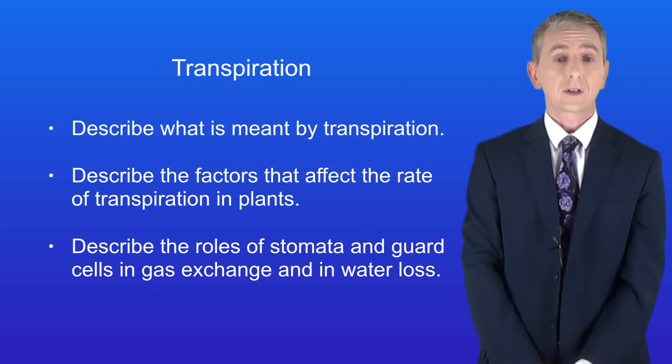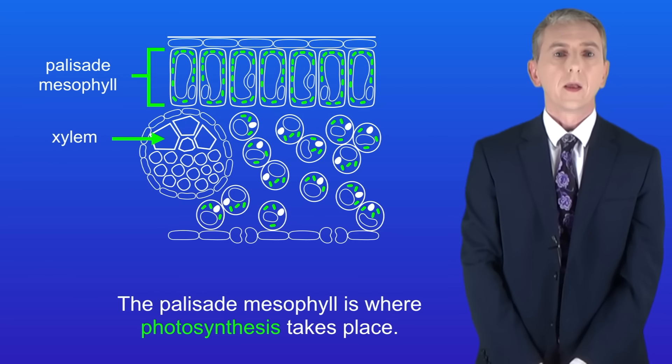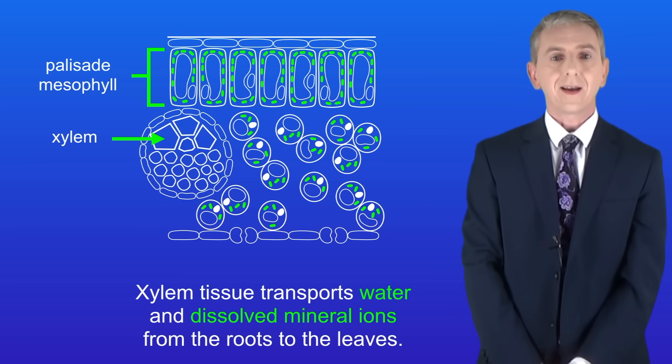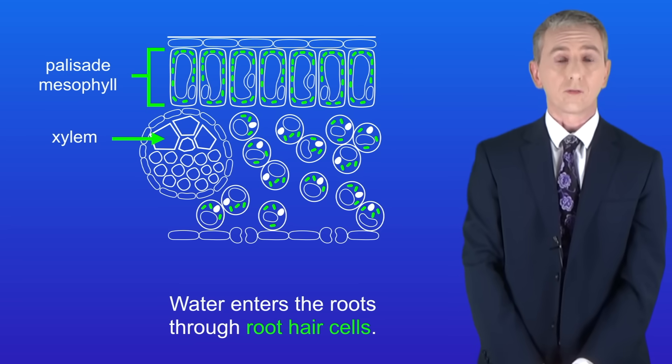In the last video we looked at the different tissues found in the leaf. Two of the key tissues include the palisade mesophyll and the xylem. The palisade mesophyll is where photosynthesis takes place and xylem tissue transports water and dissolved mineral ions from the roots to the leaves. Remember that water enters the roots through root hair cells.